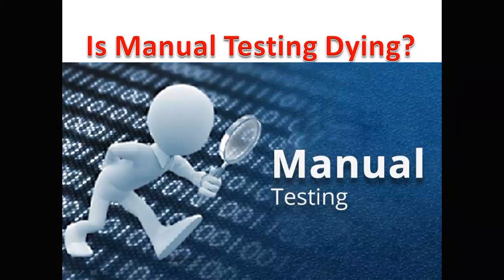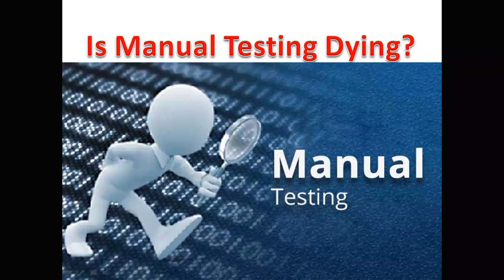Software testing can be done in two ways: one is manual testing, another is test automation or automated testing. Automation testing can't cover 100% of test cases, so some companies just use automation testing for regression testing only.